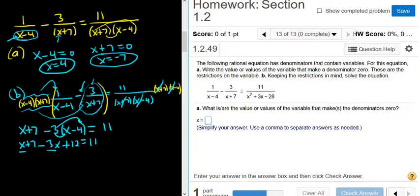So x minus 3x, that's minus 2x. 7 plus 12 is 19. That's equal to 11.